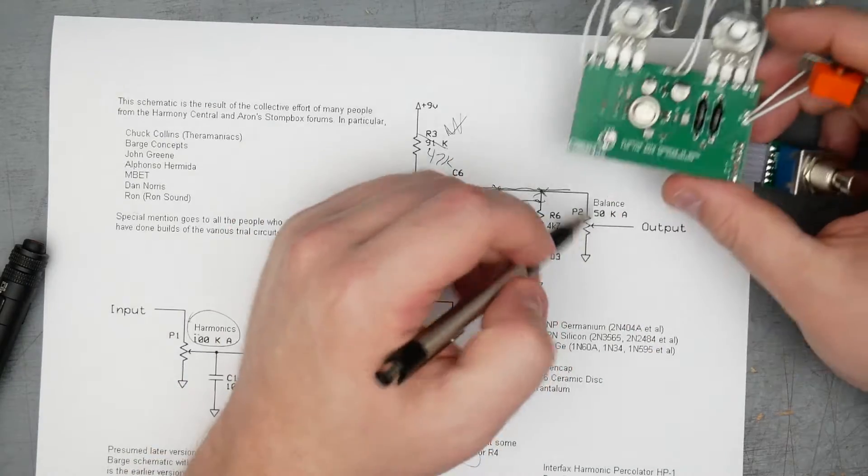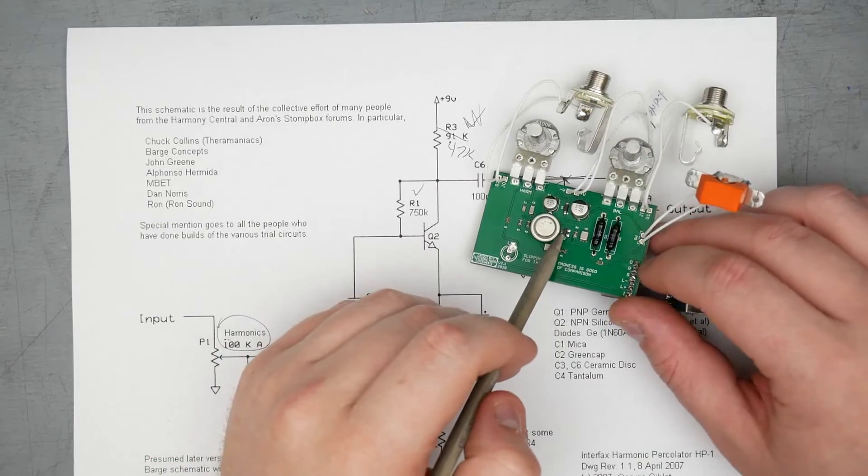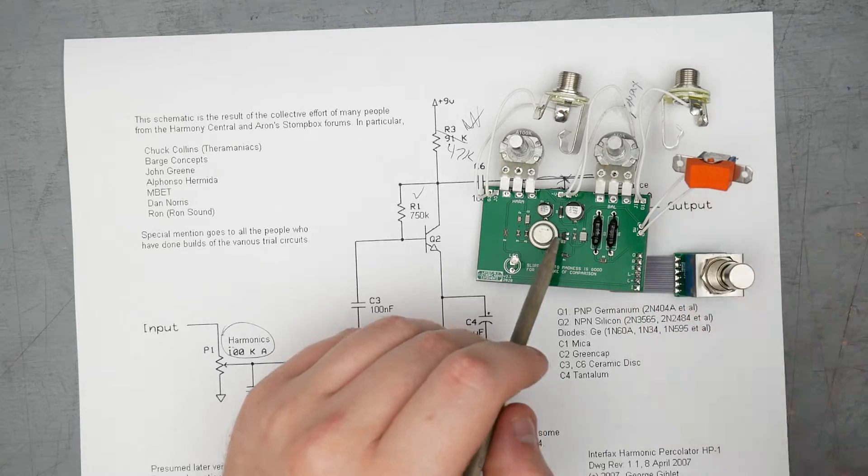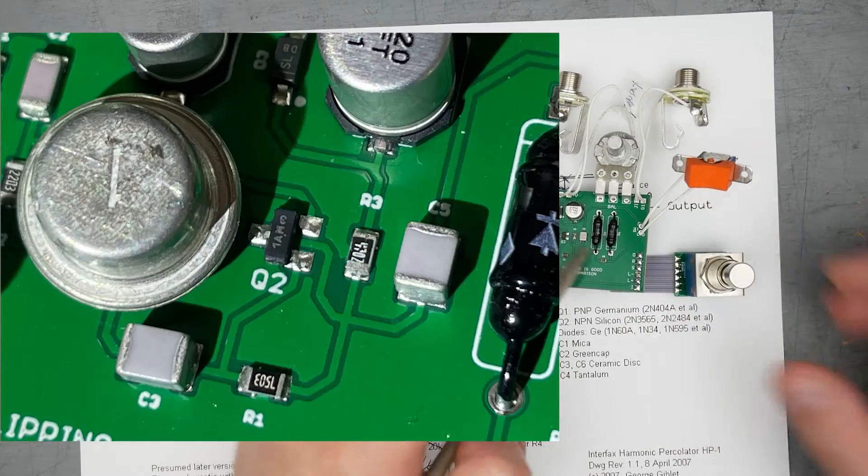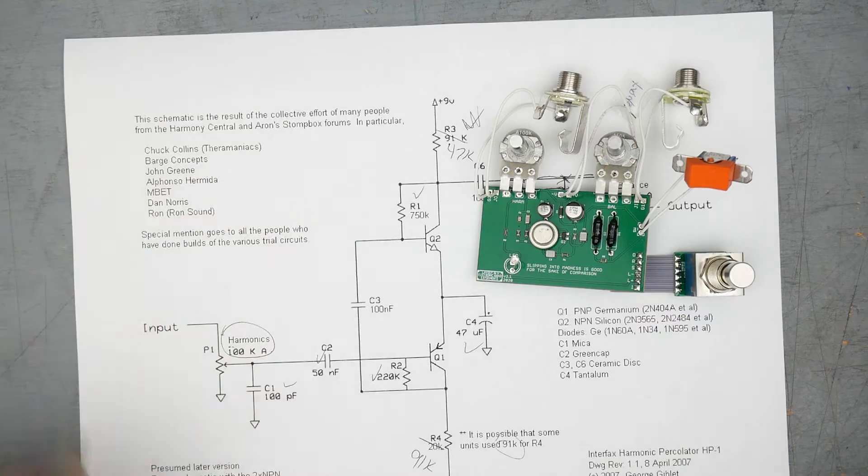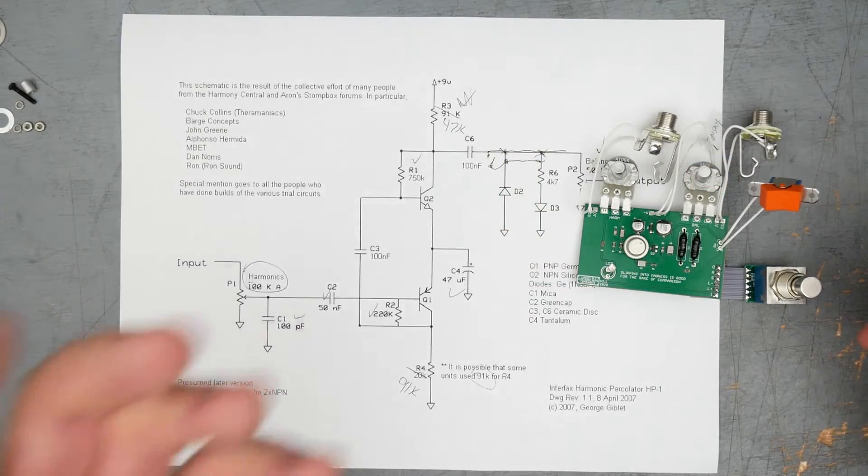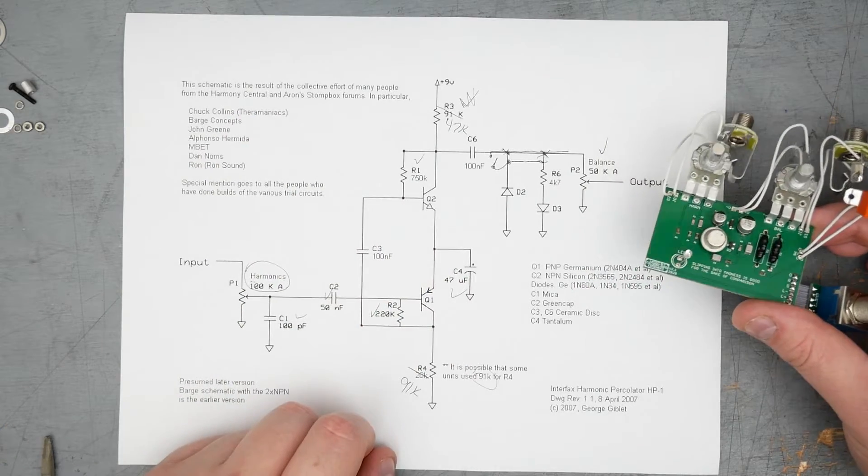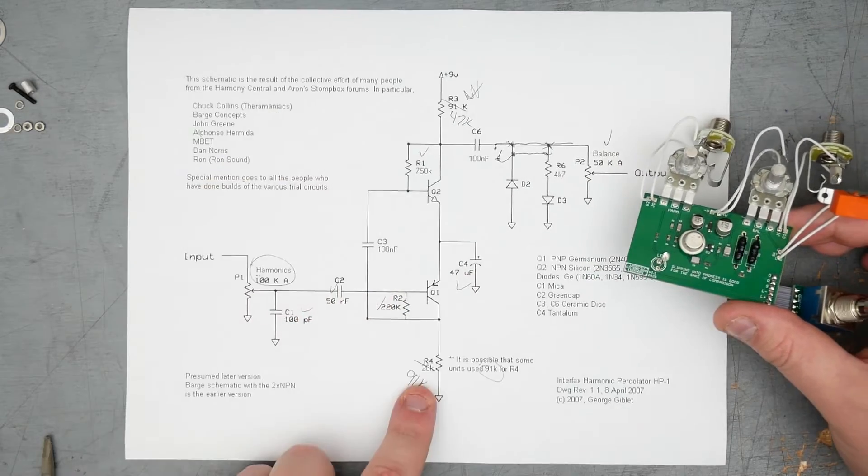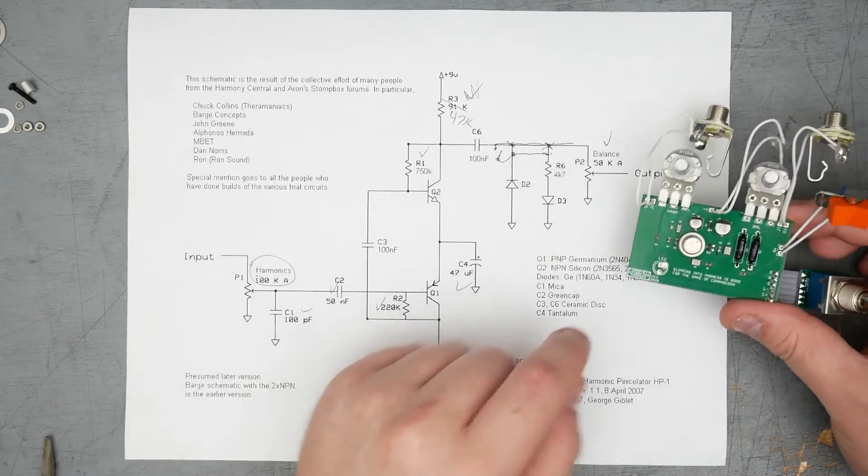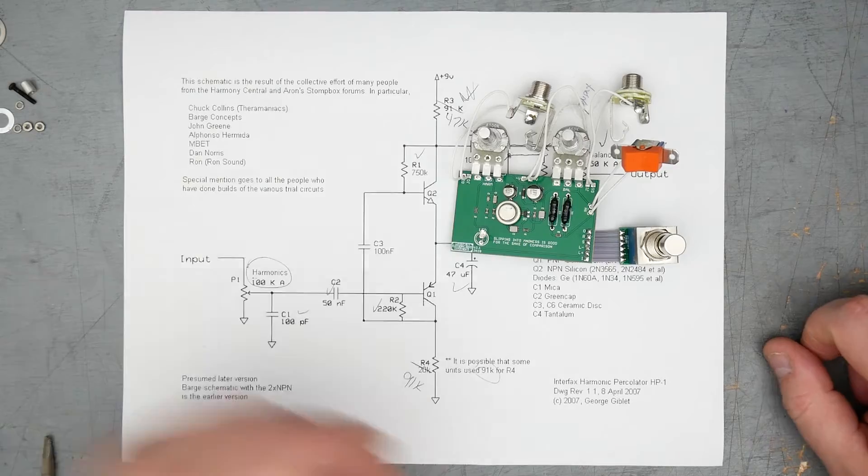All right, I just looked up the code on the Q2 here, the silicon surface mount transistor there and I'll put a picture of it. It's a 1AM, which is a 2N3904 NPN BJT. All right, so there you go. That is the Land Devices HP-2, a pretty similar clone of the harmonic percolator with a couple values changed and the ability to switch out the clipping diodes near the output. So let's go ahead and put the pedal back together.